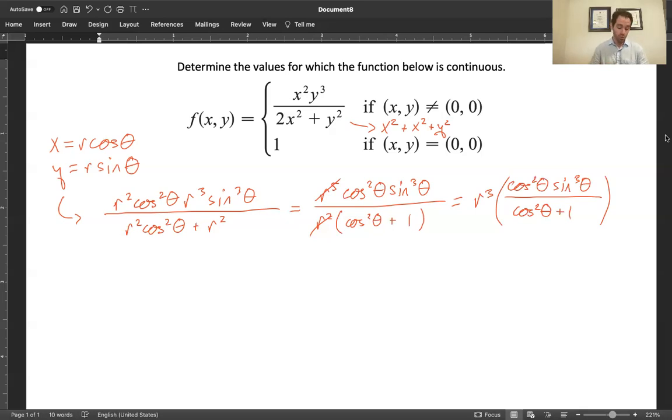Now remember what I wanted to do with this. I wanted to send r to zero. And if I send r to zero, what that means is that this entire thing is going to be forced to go to zero. You might contend, maybe the bottom is going to do something funky that causes it to interact strangely with the top. But keep in mind that the bottom is cosine squared.